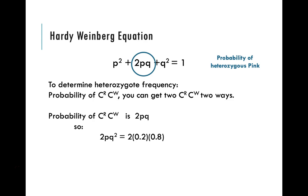The probability of being heterozygous, remember, is dependent on the fact that you can get that from two, in two different ways. You can be CR from dad, CW from mom, or CW from dad, CR from mom. So two times the probability of both alleles.